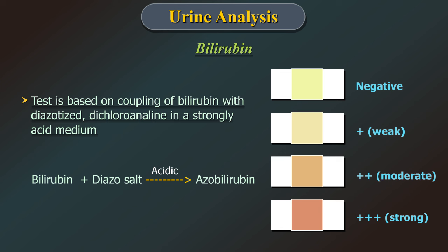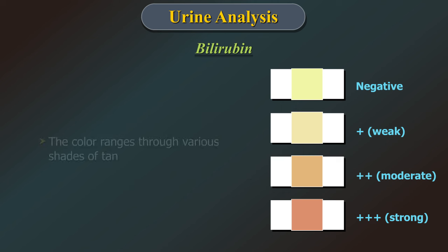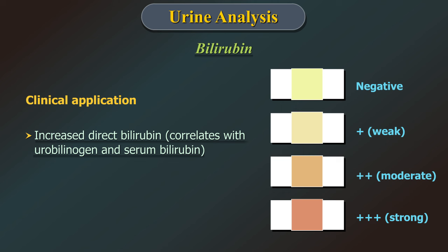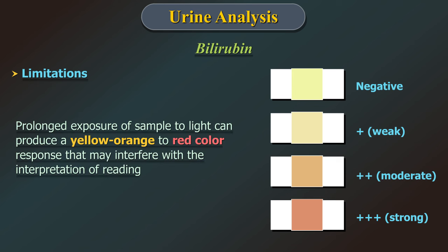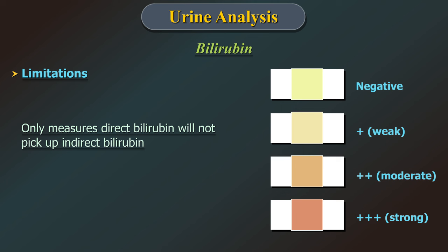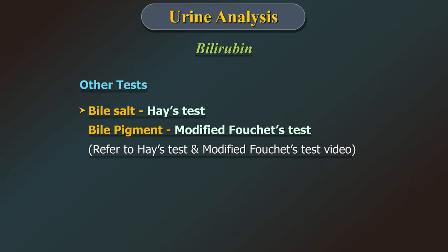Bilirubin: the test is based on coupling of bilirubin with diazotized dichloroaniline in a strongly acidic medium. The colour ranges through various shades of tan. Clinical application is for detecting increased direct bilirubin, which correlates with urobilinogen and serum bilirubin levels. Limitations include prolonged exposure of sample to light causing a yellow-orange to red colour response that can interfere with interpretation. It only measures direct bilirubin and does not pick up indirect bilirubin. Other tests are bile salt by Hay's test and bile pigment by modified Fouchet's test.